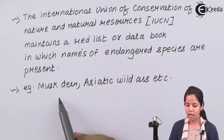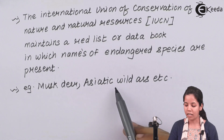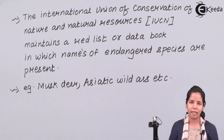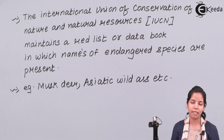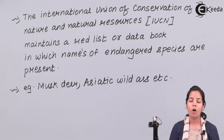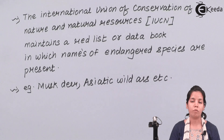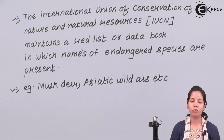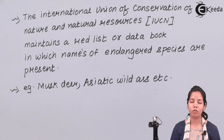Some of these include the musk deer, the wild ass, and others. Now, this Red Data Book basically classifies organisms into three different categories: organisms which are very, very rare; organisms which are vulnerable or on the verge of extinction; and organisms which are endangered and need to be taken care of faster.